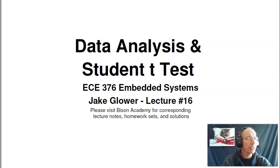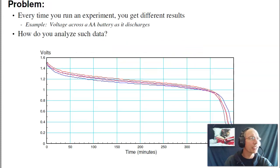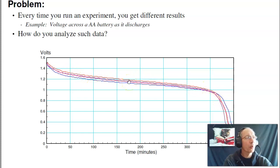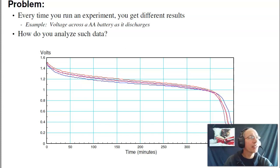Welcome to ECE 376, lecture number 16: Data Analysis and Student T-Test. Every time you run an experiment, you're going to get different results. For example, I measured the voltage drop across a AA battery as it discharges across a 10-ohm resistor. I measured it four times for four different batteries and each time got a different answer. When you get variations like that, how do you analyze that data? That's what this lecture is all about.